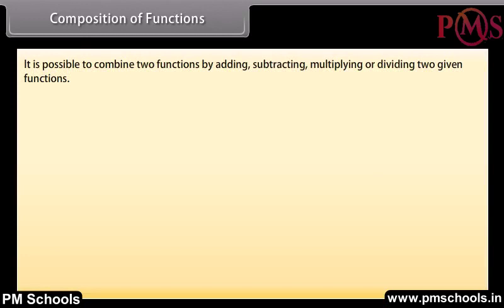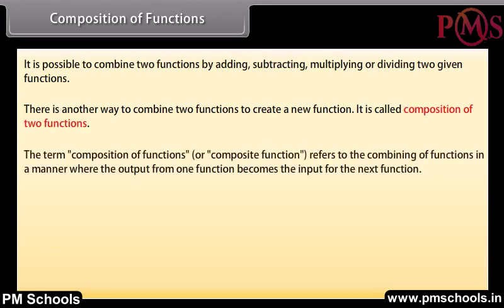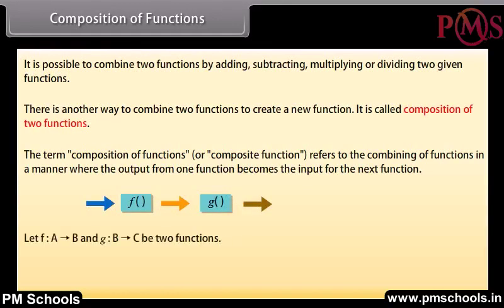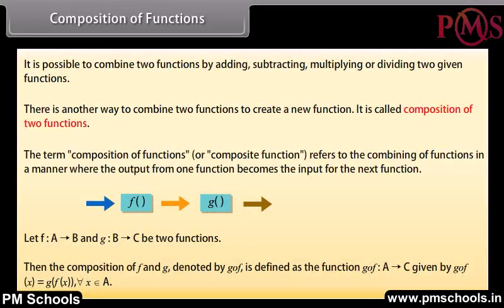Composition of functions. It is possible to combine two functions by adding, subtracting, multiplying, or dividing two given functions. There is another way to combine two functions to create a new function — it is called composition of two functions. The term composition of functions refers to combining functions where the output from one function becomes the input for the next. Let function f from A to B and function g from B to C be two functions.